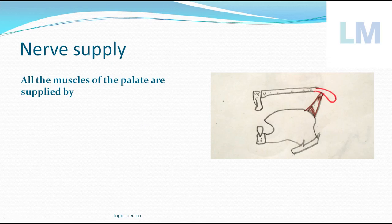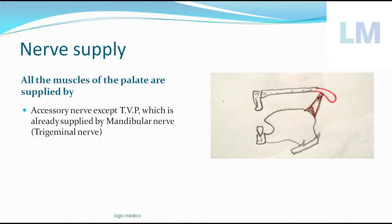Regarding nerve supply: all the muscles of the palate are supplied by the 11th cranial nerve, the accessory nerve — except the tensor veli palatini. That one muscle, which is closer to the mandible and is developed from the mandibular arch, is supplied by the mandibular nerve. All remaining muscles of the soft palate are supplied by the 11th cranial nerve.